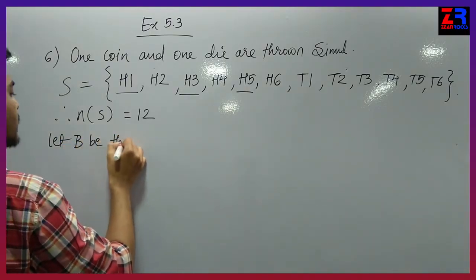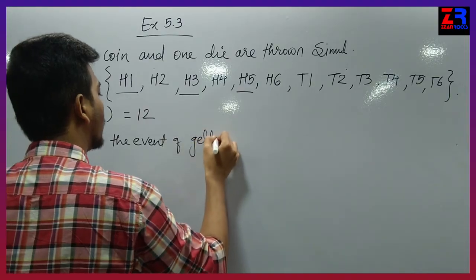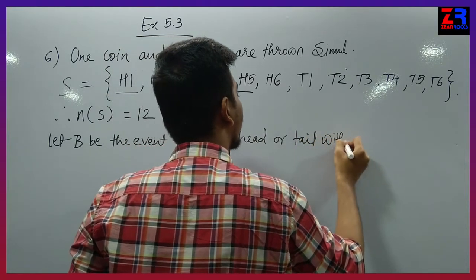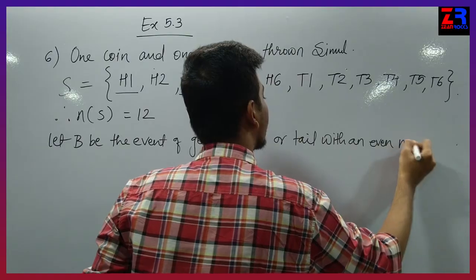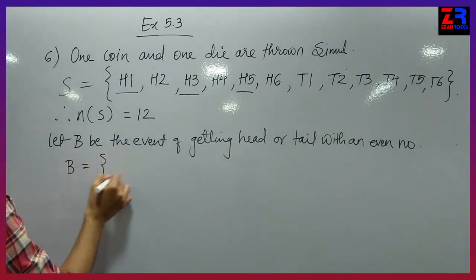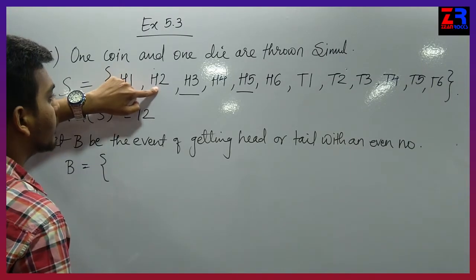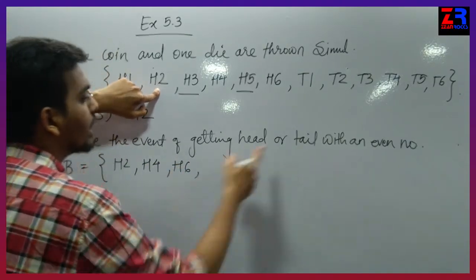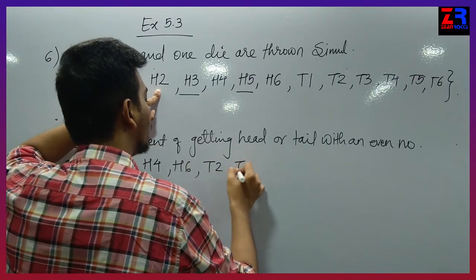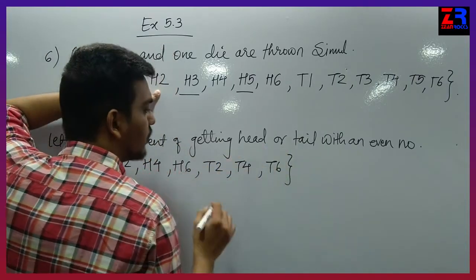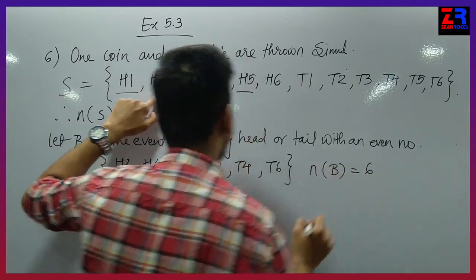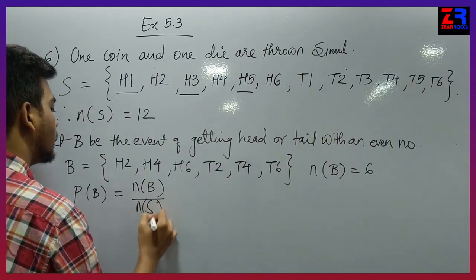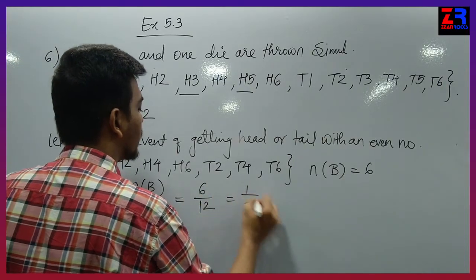Let B be the event of getting head or tail with an even number. Head with even number: H2, H4, H6. Tail with even number: T2, T4, T6. Therefore N of B equals to 6. Probability of B equals to N of B upon N of S = 6 upon 12 = 1 upon 2.